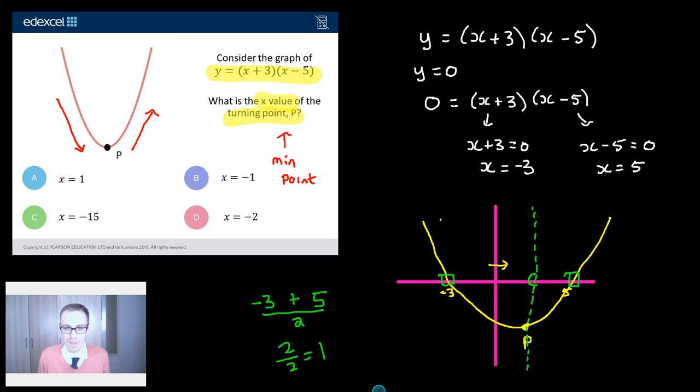So I reckon that value there is x equals 1. It's 4 away from that crossing point and if you take 4 off 1 it's 4 away from that crossing point. So I reckon x equals 1 is the x value of the turning point.